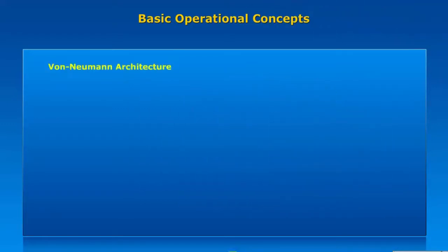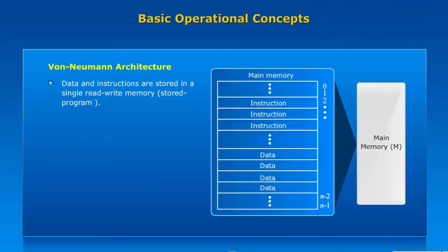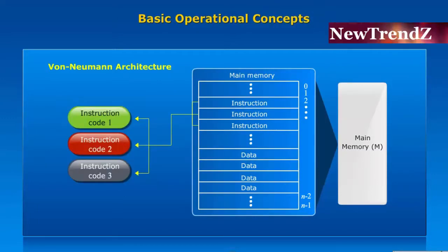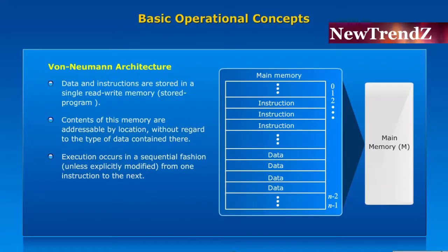Almost all computer designs are based on concepts developed by John von Neumann. Such a design is referred to as the von Neumann architecture and is based on three key concepts. First is the stored program concept, where data and instructions are stored in a single read-write memory. Memory locations are sequential and addressable by location regardless of data type. Instructions are stored in sequential locations, and execution proceeds sequentially from one instruction to the next unless explicitly modified.